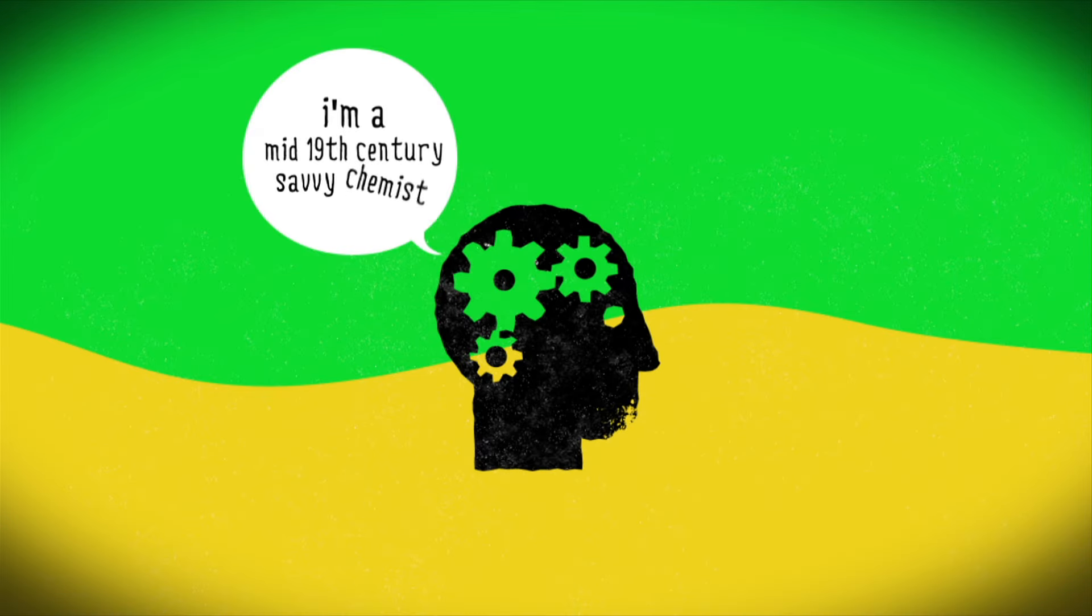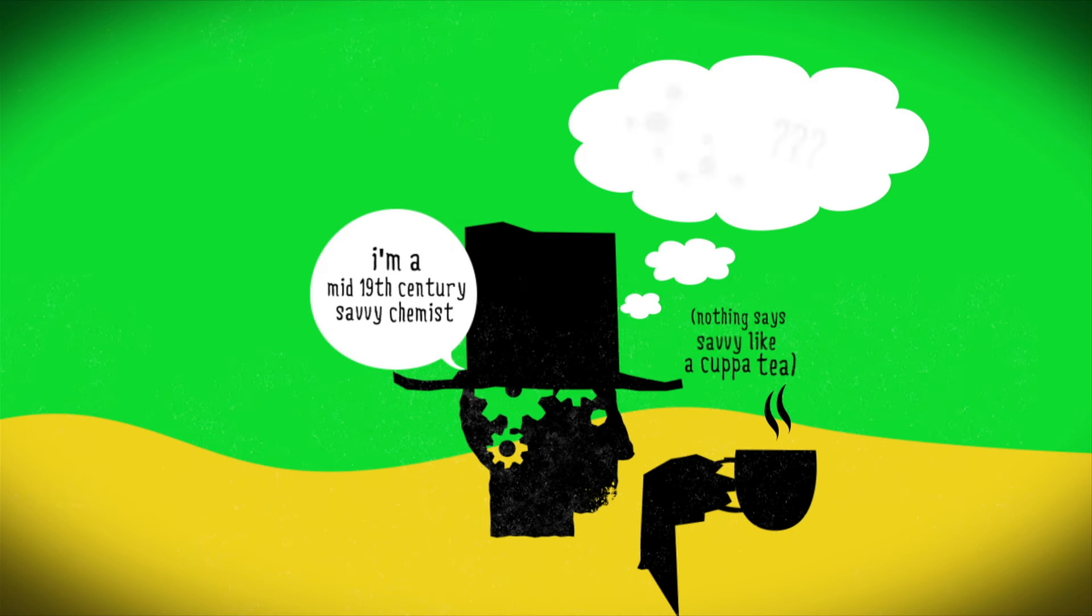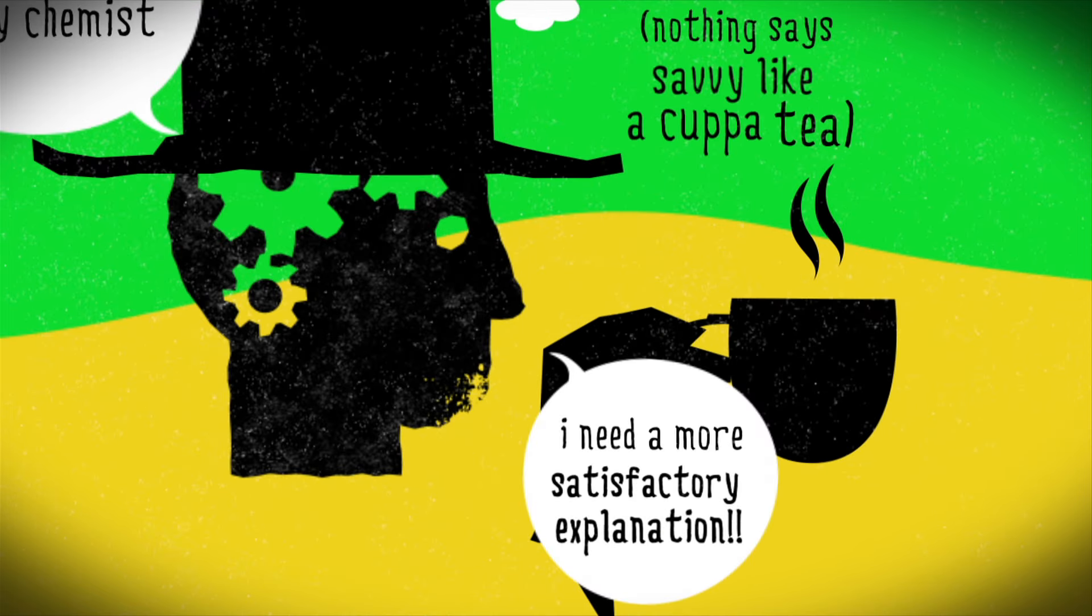It was clear to savvy chemists of the mid-19th century that these flat representations couldn't explain many of their observations, but chemical theory hadn't provided a satisfactory explanation for the three-dimensional structures of molecules.